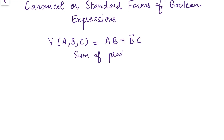Why is it known as sum of products? Because here the individual term a into b is a product term, b-complement c is another product term, and then they are added together. That's why we call it sum of products.